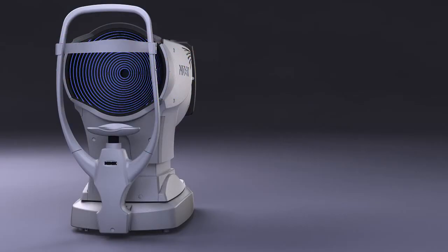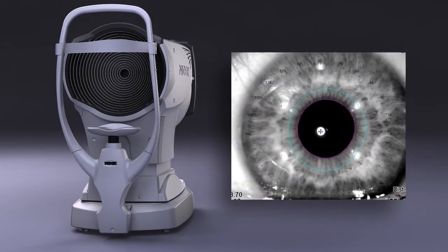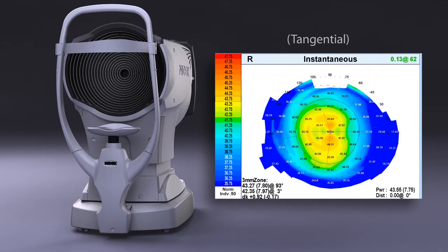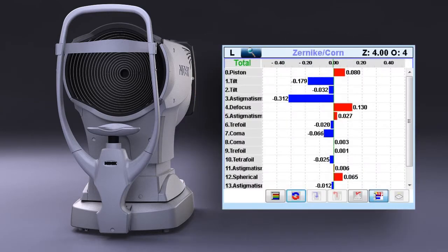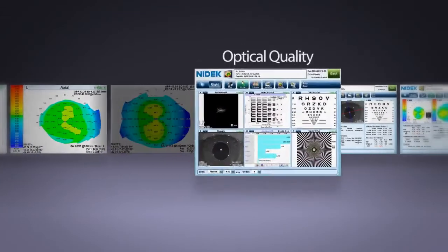The blue light corneal topography provides you with keratometry, photopic pupil, axial, instantaneous, tangential, gradient, Zernike graphs, and elevation maps.